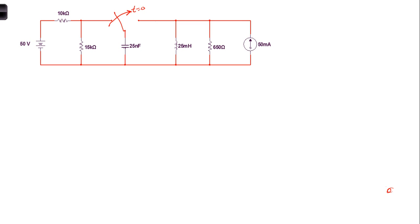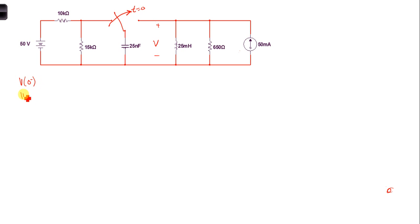Because this is a parallel combination after the switching, all components will be in parallel with each other, so the voltage is going to be the same across all the devices. We'll call that V. So we're going to be interested in V of zero minus, V of zero plus, and V at infinity.